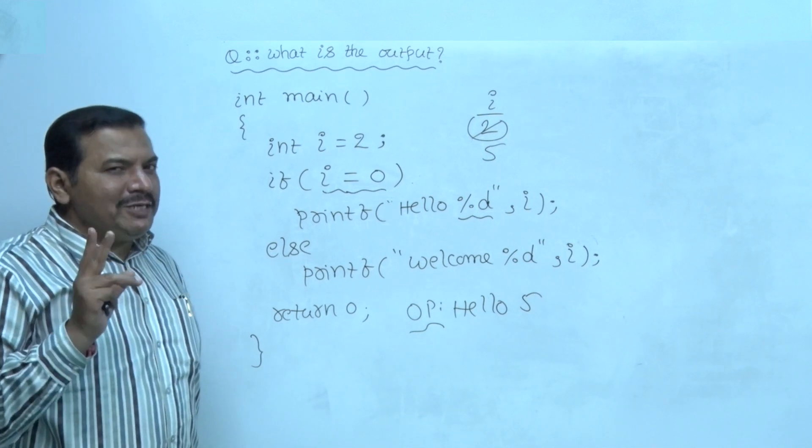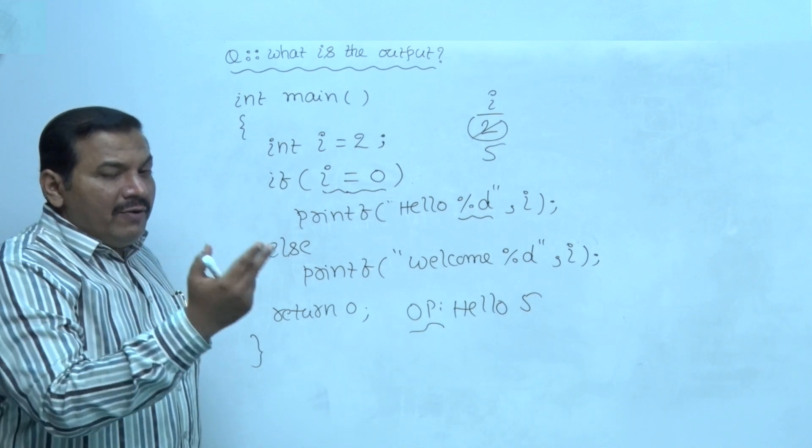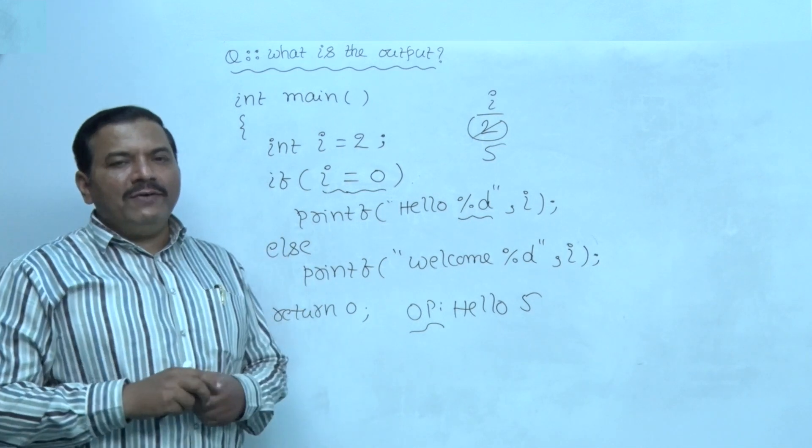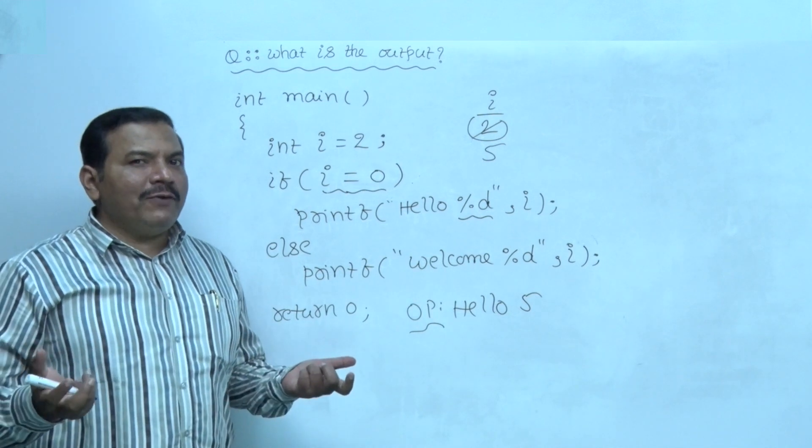Here again equality is not tested. i value is now 0. The right side expression value stored inside left side variable. Now, the value of i is 0.